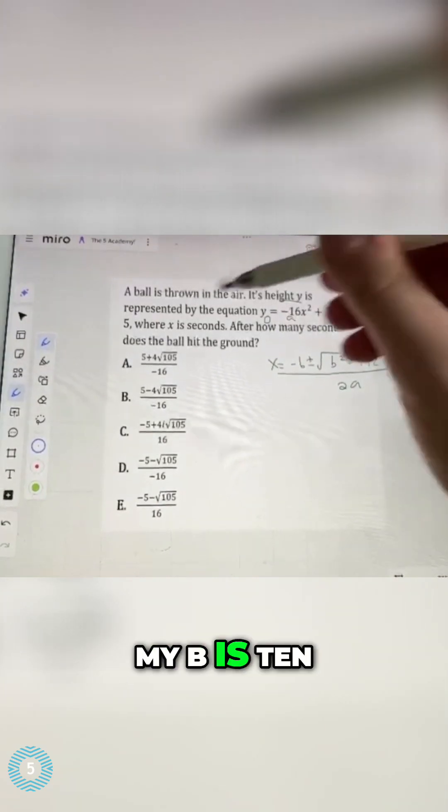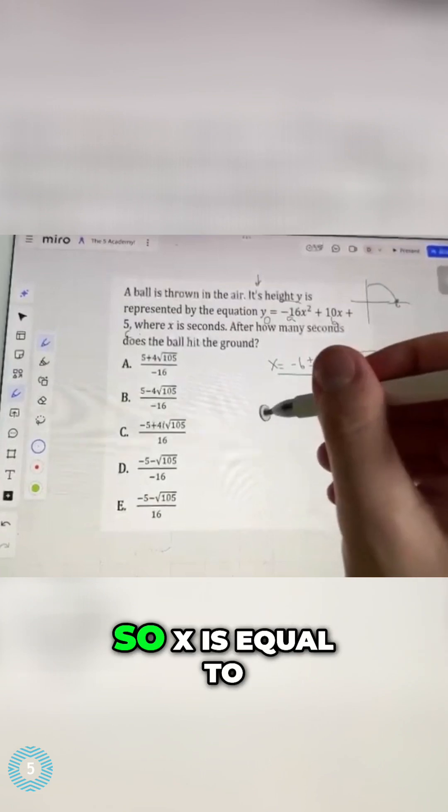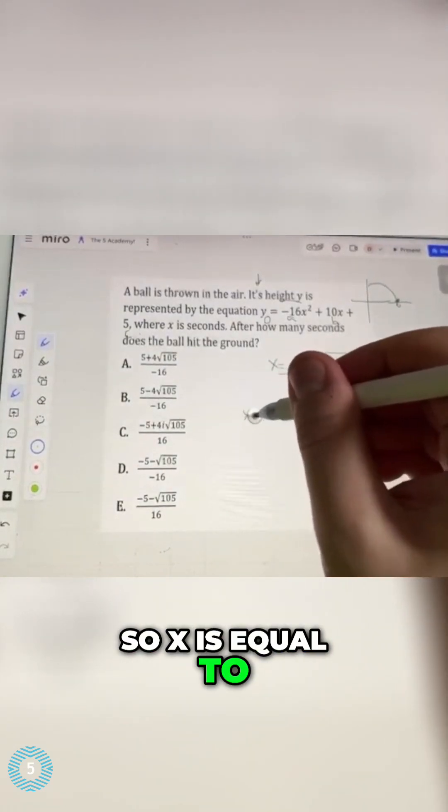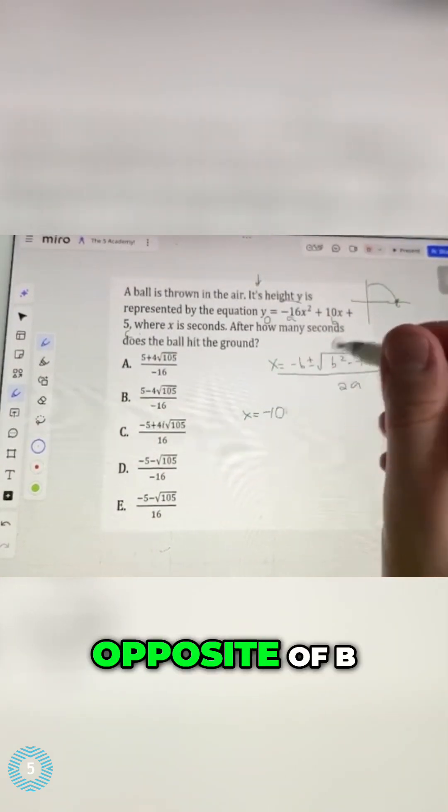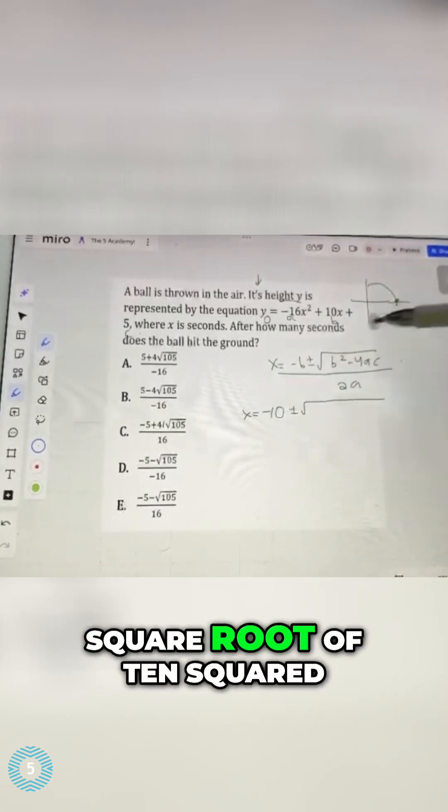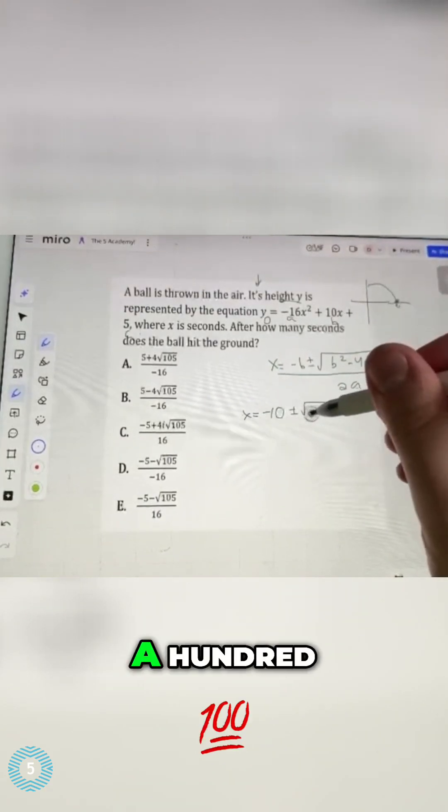My a is negative 16, my b is 10, and my c is 5. So x is equal to negative 10, right, opposite of b, plus or minus the square root of 10 squared, 100.